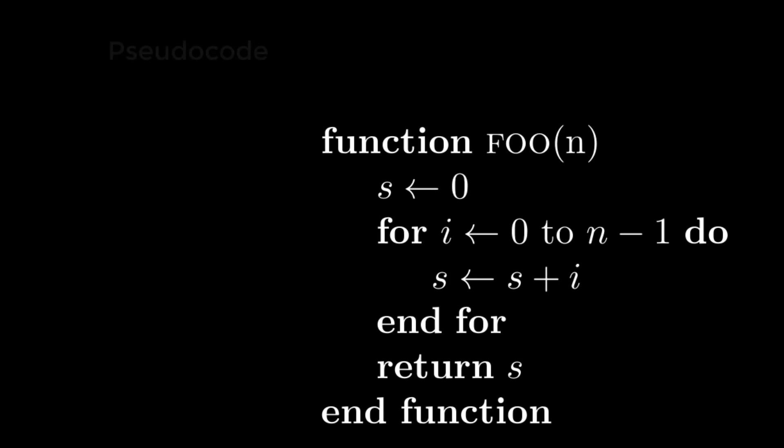We call this way of writing code pseudocode. It's code that's not really written in any specific programming language, but uses concepts that many programming languages share. So we have our function, we'll call it foo. It has this variable called s. We add all the numbers from 0 to n-1, and then we return that sum.